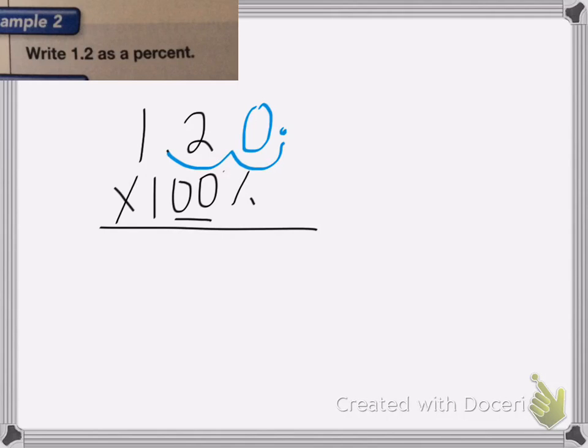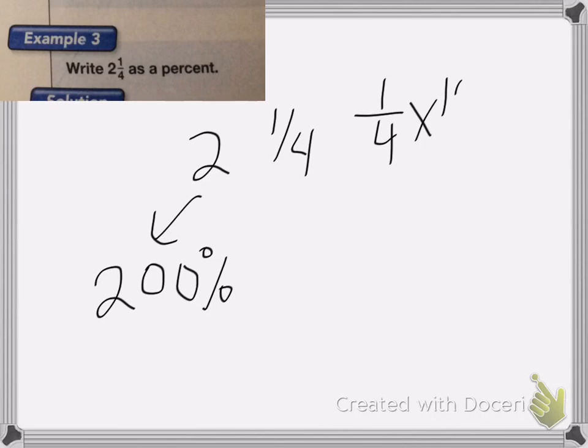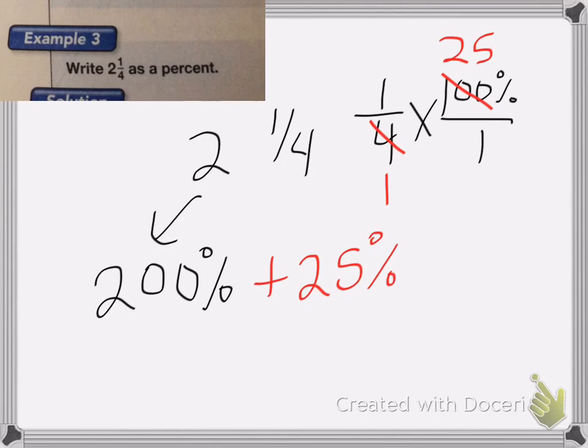This one is write 2 and 1/4 as a percent. So we have 2 and 1/4. On this one, I know that 2 is equal to 200%. Because I have 2 wholes, which means I have 2 times 100%. So now I can just multiply 1/4 by 100%. So I can do 1/4 times 100% over 1. I'm going to cancel. 4 becomes a 1, 100 becomes a 25.